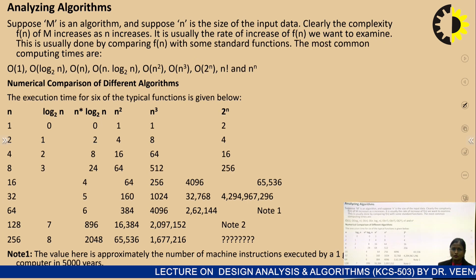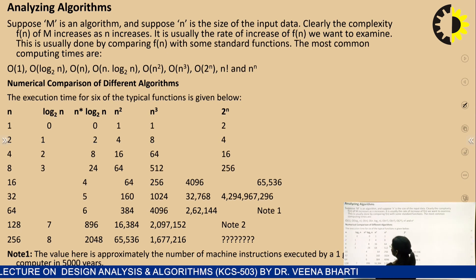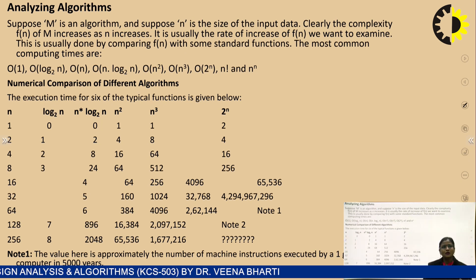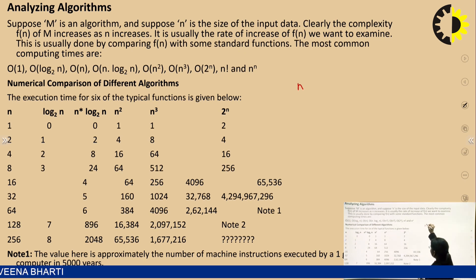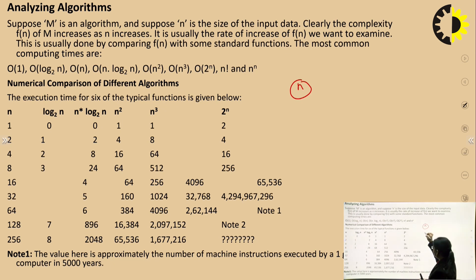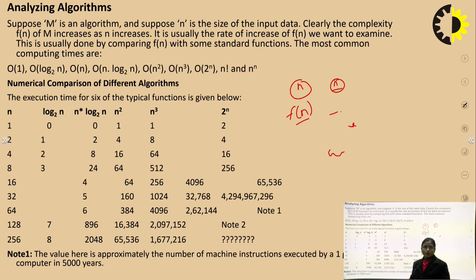How do we analyze an algorithm based on these notations? Suppose n is the size of input data. Clearly the complexity f(n) of the algorithm increases as n increases. If f(n) determines the rate of growth, then as n increases, f(n) also increases. This is usually done by comparing f(n) with some standard function.